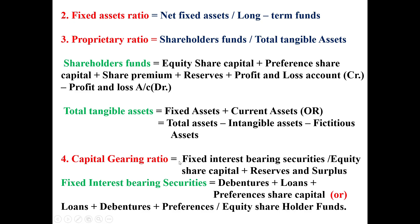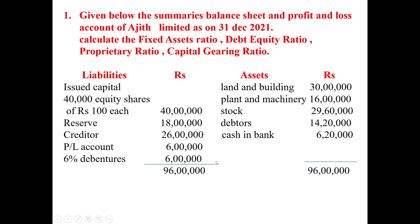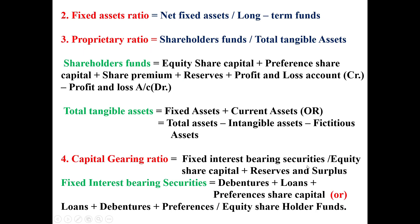The Capital Gearing Ratio direct formula is: Fixed Interest Bearing Securities divided by Equity Share Capital plus Reserve and Surplus. Fixed Interest Bearing Securities include debenture plus loans plus preference share capital, divided by equity share capital plus reserve and surplus.